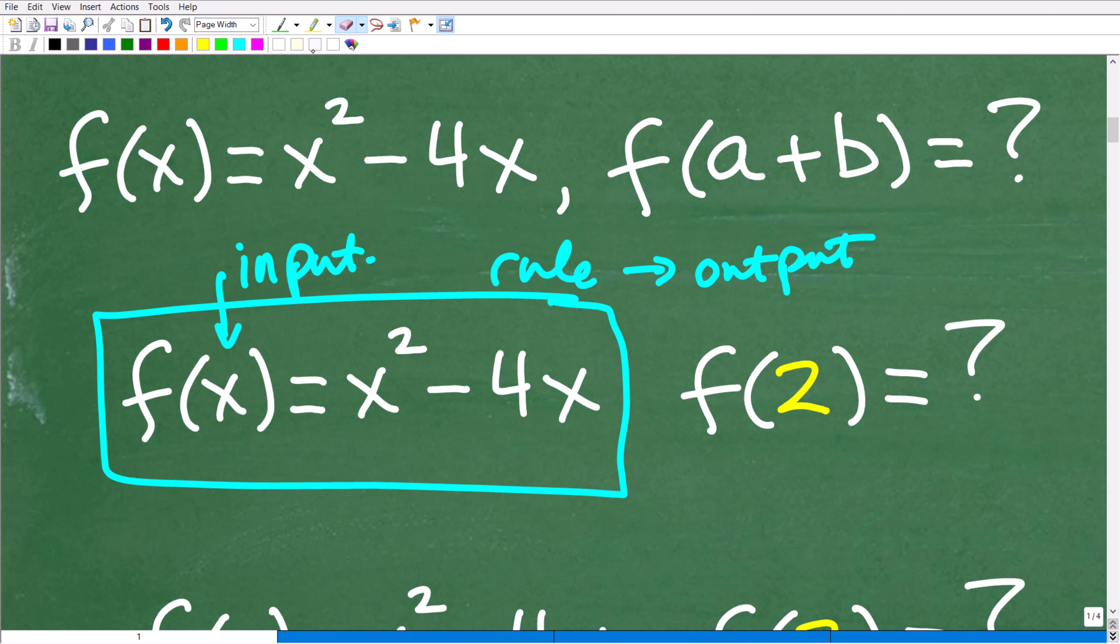So that's all it is. We have a rule and the x, this could be any variable. Whatever we plug in here is our input value. We simply replace all these x's with this input value. So let's see how this works here real quick before we tackle this problem. Let's find f(2) of this function.